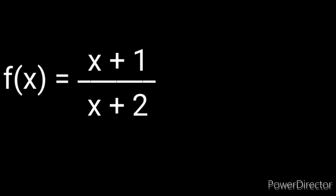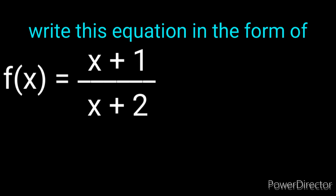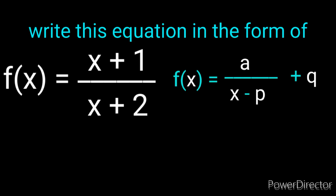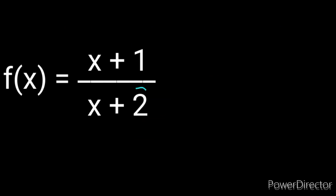Before we go to a higher level, let's deal with two questions at level one. You're given this equation and they ask you to write it in the form of f(x) equals a over x minus p plus q. What you have to do is focus on the denominator.